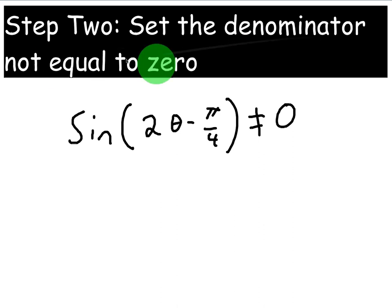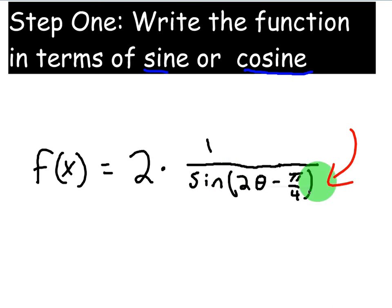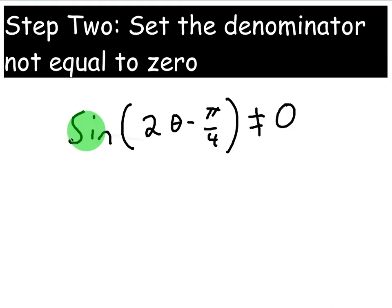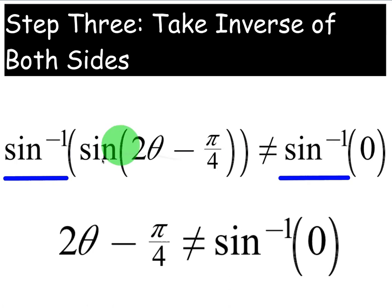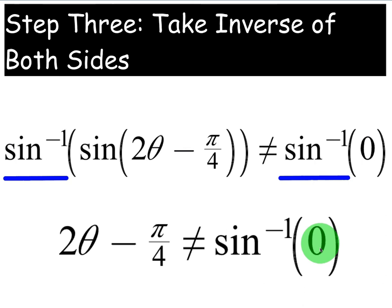Step two is to set the denominator not equal to zero. Our denominator is sin(2θ - π/4), and we set that not equal to zero. Step three is to take the inverse of both sides — this cancels the sine and lets us solve for θ. So now we have: 2θ - π/4 is not equal to arcsin(0).